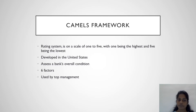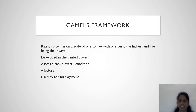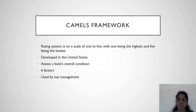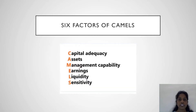The CAMELS rating system is on a scale of 1 to 5, with 1 being the highest and 5 being the lowest. It was developed in the United States and assesses a bank's overall condition. The six factors used by top management are: Capital Adequacy, Assets, Management Capability, Earnings, Liquidity, and Sensitivity.